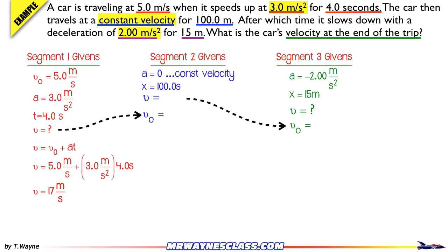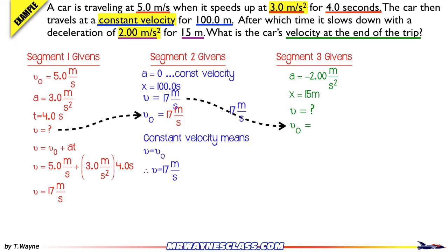Now that I have this piece, the car moves at a constant velocity in the second segment, which means there's no change in velocity. So the 17 meters per second is also the final velocity for the second segment. That final velocity then becomes the initial velocity for the third segment. Now I have enough givens in the third segment to find the final velocity for the entire trip. I'll use the formula v² = v₀² + 2ax.